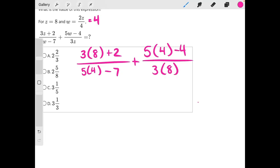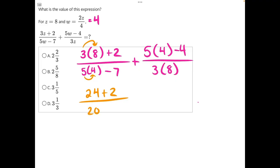Now let's start to simplify, starting with our multiplication. 3 times 8 will give us 24 plus 2 in this numerator. 5 times 4 will give us 20 minus 7 in that denominator. 5 times 4 again is 20 minus 4 in that numerator. And 3 times 8 is 24.